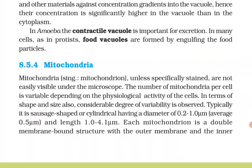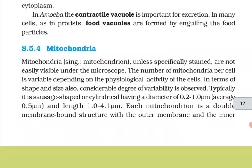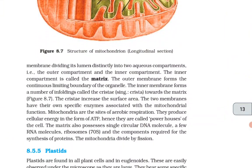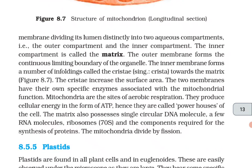Mitochondria: unless specifically stained, mitochondria are not easily visible under the microscope. The number of mitochondria per cell is variable depending on the physiological activity of the cells. Typically it is sausage-shaped or cylindrical, having a diameter of 0.2 to 1 micrometer (average 0.5 micrometer) and length of 1 to 4.1 micrometers. Each mitochondrion is a double membrane-bound structure with the outer membrane and the inner membrane dividing the lumen distinctly into two aqueous compartments — the outer compartment and the inner compartment, called the matrix.